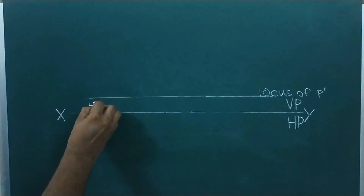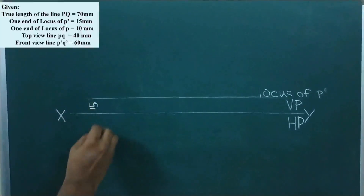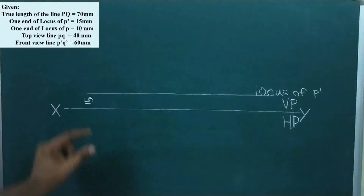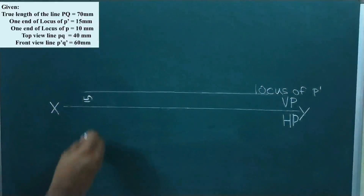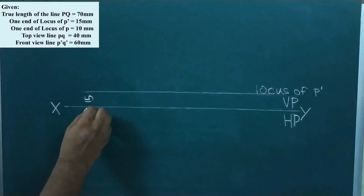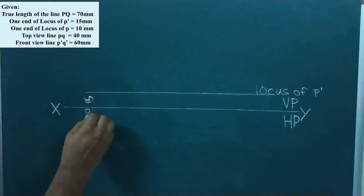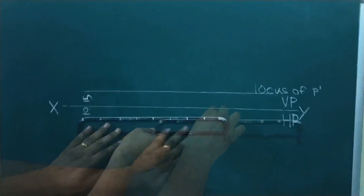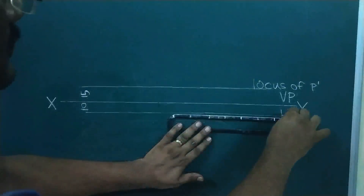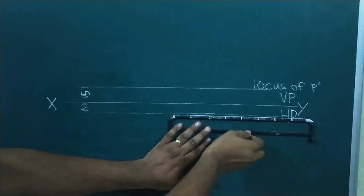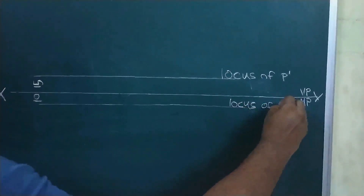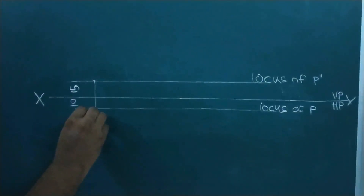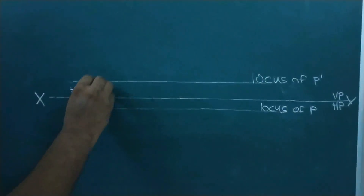Now draw the HP projected locus. That locus detail is 10 mm in front of the vertical plane. Measure 10 mm from the XY line, draw that locus line, and name it as locus of P. After drawing the locus, now mark the point P and P-dash properly.